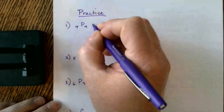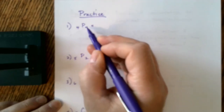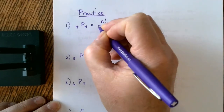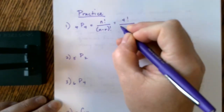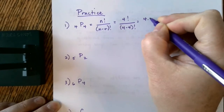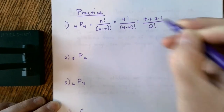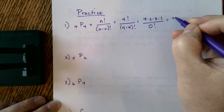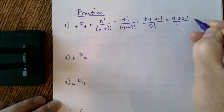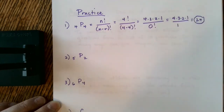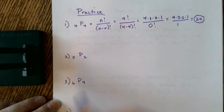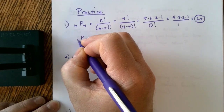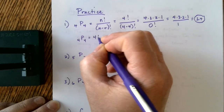Let's do a little practicing to get used to the symbols. Using the permutation formula, the permutation of 4 items taken 4 at a time is n factorial divided by (n minus r) factorial — that's 4 factorial divided by (4 minus 4) factorial. We learned in our last video that 0 factorial equals 1, so we get 4 × 3 × 2 × 1 divided by 1, which is 24. When the total items equals the number selected, it simplifies to just n factorial.